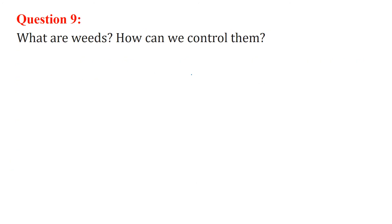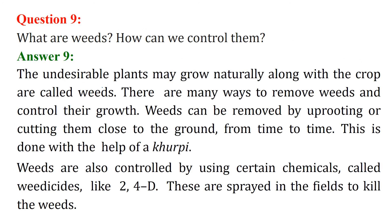What are weeds and how can we control them? Weeds are unwanted plants that grow along with the basic crop. There are various ways to remove them — you can uproot them using a khurpi, or use chemicals like weedicide 2,4-D.